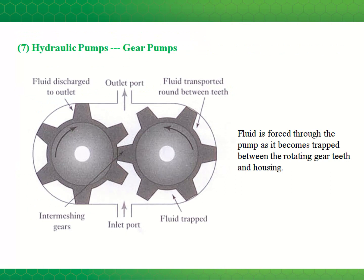Back to hydraulic systems — there are several different types of pumps used. The most common is the gear pump, made up of two gears with interlocking teeth. As they turn, the fluid is taken in, passes along between the gears and the pump wall, and is compressed to the outlet port. The advantage of this device is that it's simple and therefore robust and reliable. However, there is a fair amount of leakage between the teeth and the pump wall, which limits the efficiency of this design.